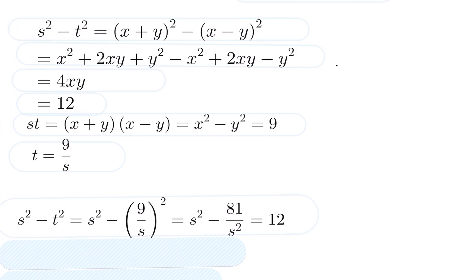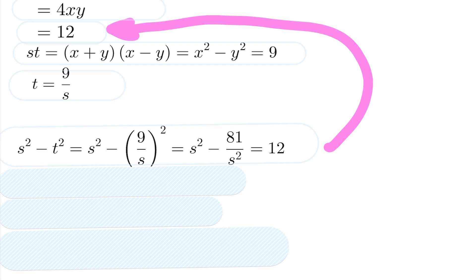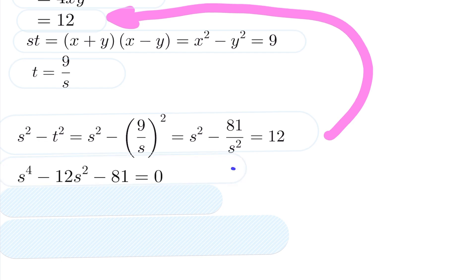We had just discovered that. So we can go ahead and set the s squared minus t squared equal to 12. But again, by doing that substitution of the t value, I now have s squared minus 81 over s squared is 12. We're going to multiply across by s squared, giving us a degree 4 polynomial, which we can treat just as a quadratic.